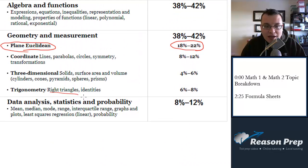Whereas in Math 1, it's just right triangles and identities, which is basically Pythagorean identity, sine squared plus cosine squared equals 1, that kind of thing. And there's only 6% to 8%, so there's not as much in the Math 1 as there is in Math 2.